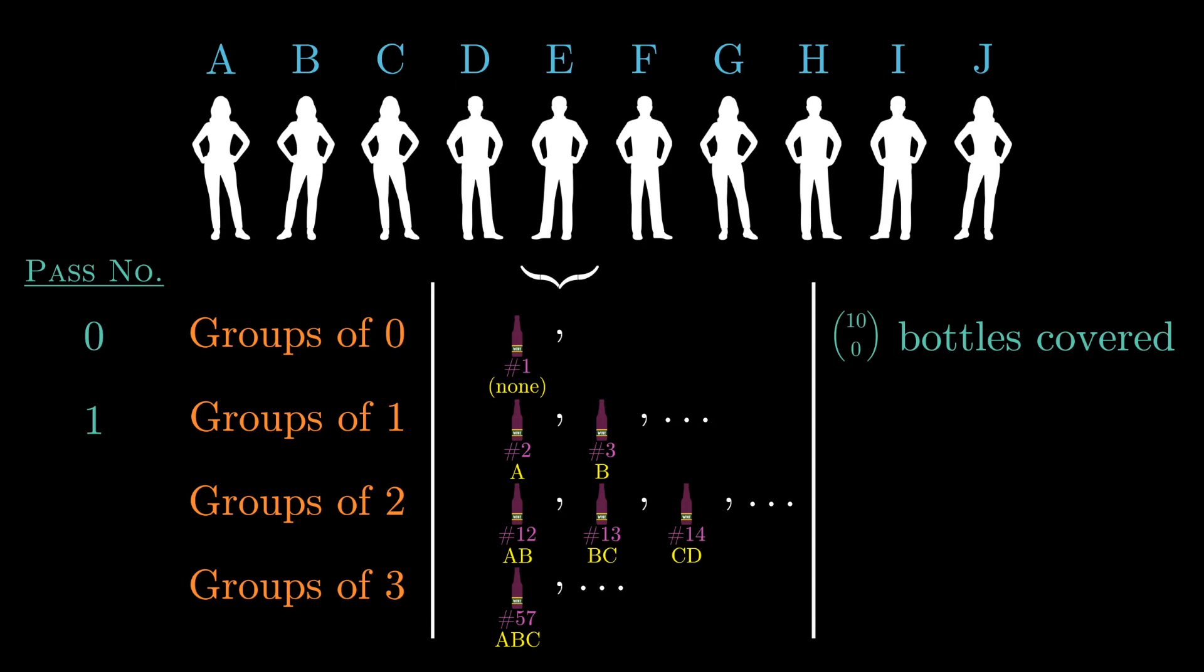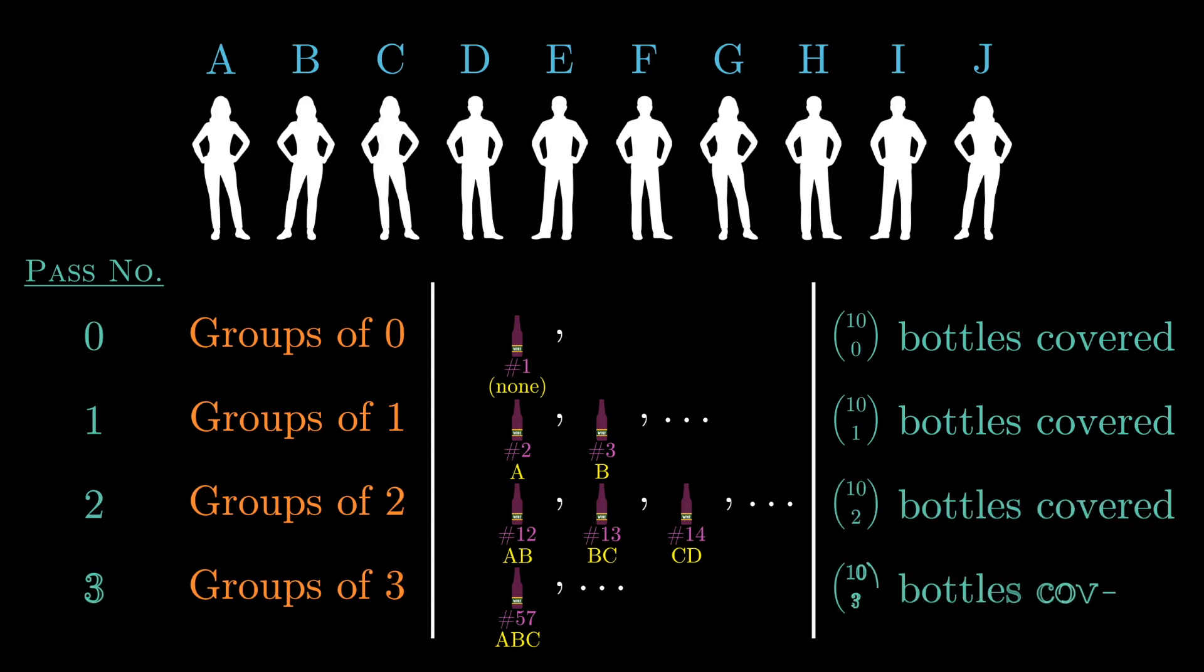And you continue on in this fashion, such that during the kth pass, where k iterates from 0 to 10, you cover as many bottles as a number of ways to choose a unique group of k tasters out of the total of 10 volunteers, that is, 10 choose k.